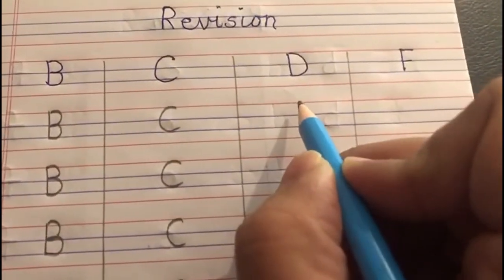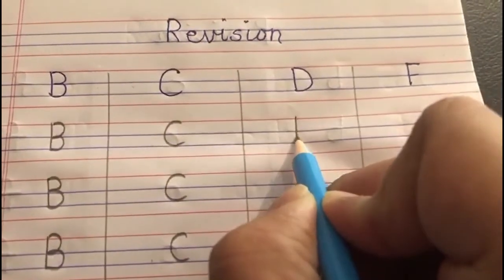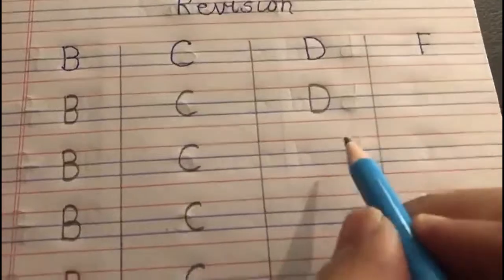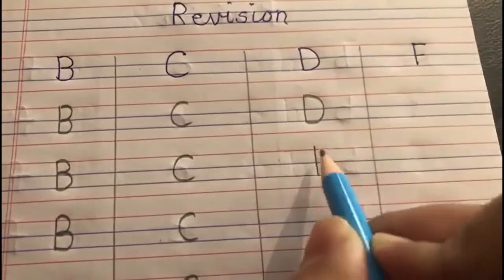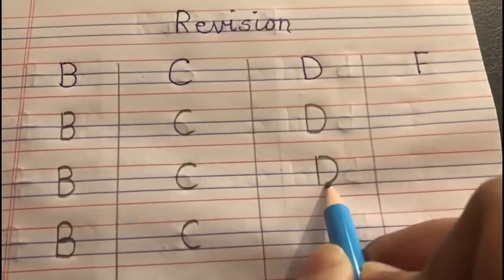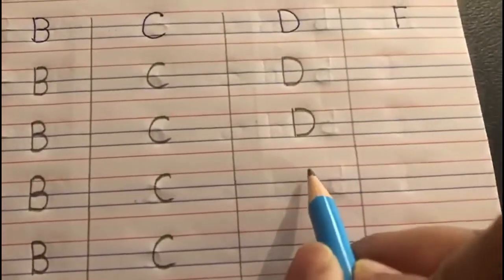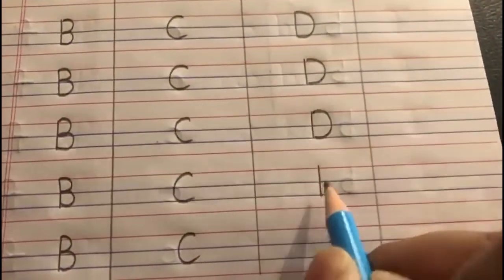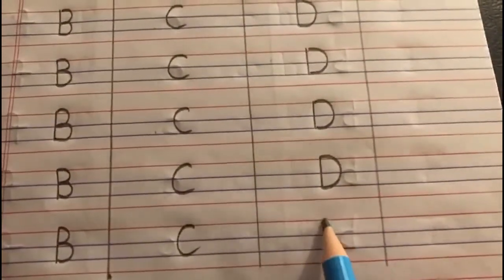Please be neat when writing — your handwriting has to be very neat. For letter D, make a standing line from the red line to the blue line, and then make a bumper from the red line to the blue line. D says duh.